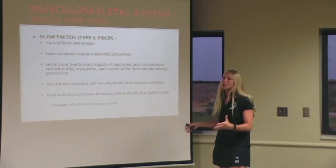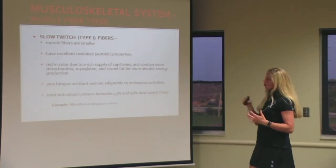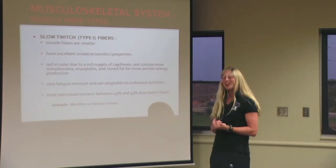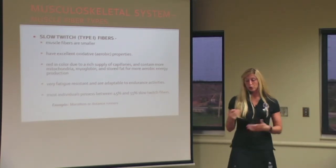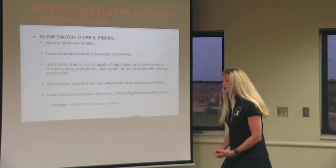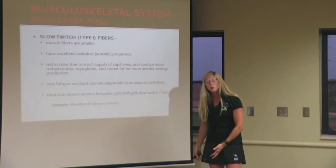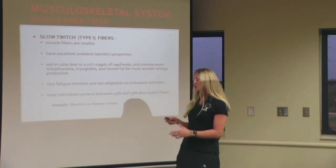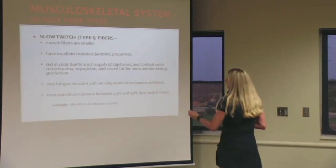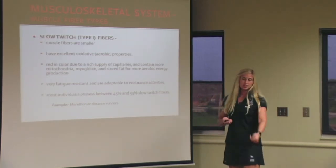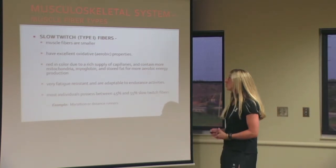Everybody's body has all three kinds of muscle fibers. It's the proportion of the muscle fibers that differs between each individual — and it's not just person to person. One person may have a different proportion in a certain muscle group than another person, making it even more specific. These slow twitch fibers are your endurance fibers. Marathon and distance runners, for example, you would assume genetically have a higher proportion of slow twitch muscle fibers.